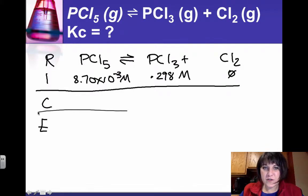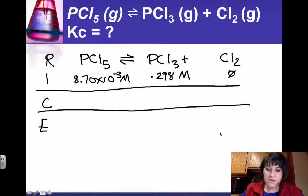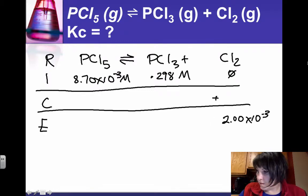So we have our initial conditions, and then they give us an equilibrium value for chlorine. So we're not going to use X, we're going to actually use what they give us for chlorine, is 2.00 times 10 to the minus 3 molar. What this means is that we gained 2.00 times 10 to the minus 3 moles per liter of the chlorine gas.